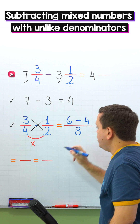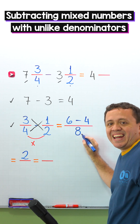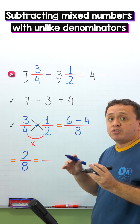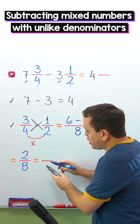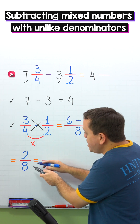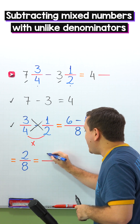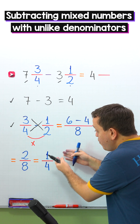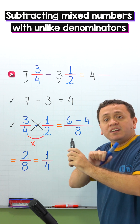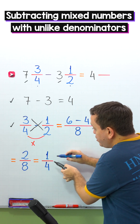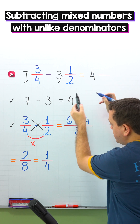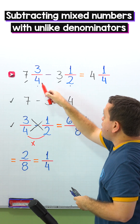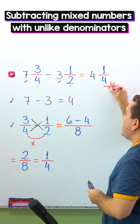Now, 6 minus 4 gives us 2, and we keep the denominator the same: 8. Pay attention, because 2 eighths is a fraction that we can simplify. So we're going to simplify this fraction by dividing the numerator and the denominator by the same number — by 2. 2 divided by 2 is 1, and 8 divided by 2 gives us 4. 1 fourth is a fraction in its simplest form and we cannot simplify it anymore. Finally, we add the difference of the fractions to the difference of the whole numbers, so we put 1 fourth next to 4. Therefore, 7 and 3 fourths minus 3 and 1 half gives us 4 and 1 fourth.